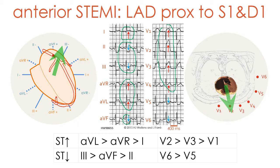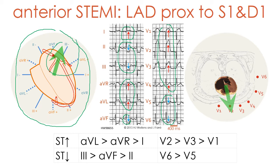There is also ST segment depression in V5 and V6. The ST segment deviation vector in the frontal plane is directed superiorly, whereas in the horizontal plane it is directed anteriorly towards V2. The hallmarks to identify this very proximal occlusion of the LAD are an ST segment elevation in V1 of 2.5 or more millimeters and an ST segment elevation in lead AVR.